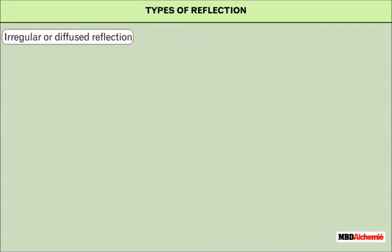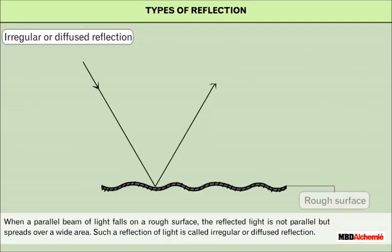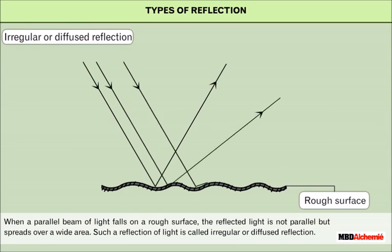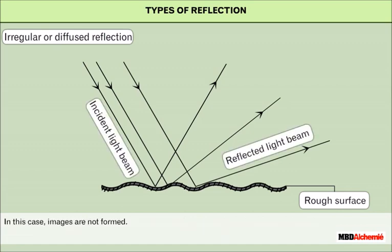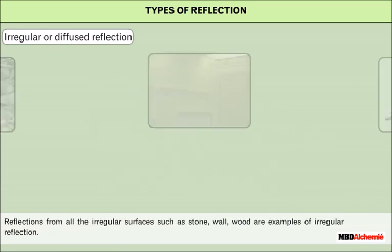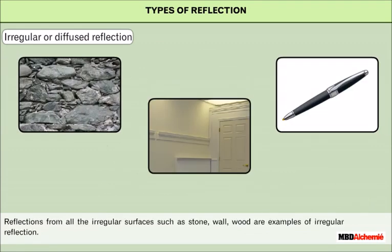Let us learn about irregular reflection. When a parallel beam of light falls on a rough surface, the reflected light is not parallel but spreads over a wide area. Such a reflection of light is called irregular or diffuse reflection. In this case, images are not formed. Reflections from all irregular surfaces such as stone, wall, and wood are examples of irregular reflection.